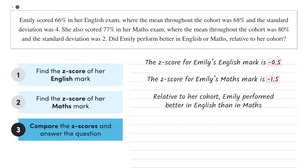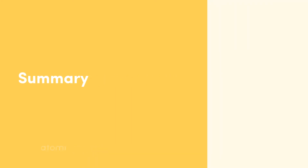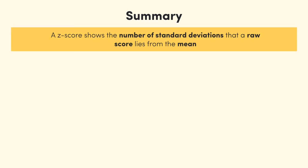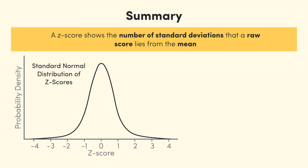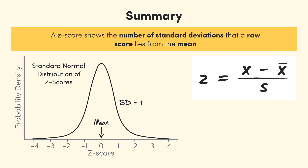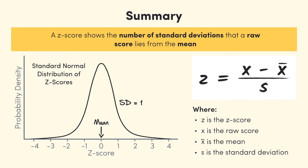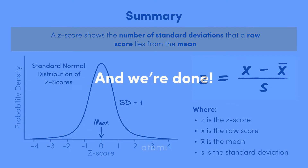And with that, we're done for this video. Let's wrap things up with a summary. We saw that we can standardise a raw value by calculating its Z-score, which shows the distance in standard deviations that a score lies from the mean. If our original data is normally distributed, the whole set of Z-scores will form the standard normal distribution, which has a mean of 0 and a standard deviation of 1. The formula is Z equals X minus X-bar all divided by S, where X is the raw score, X-bar is the mean, and S is the standard deviation. One handy application of Z-scores is in making comparisons between different datasets, as we saw in our example. Thanks for watching everyone, see you soon.